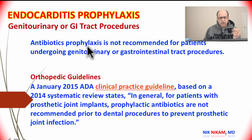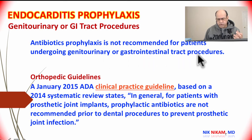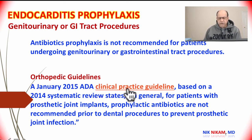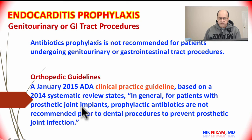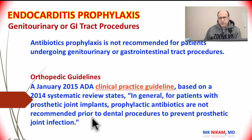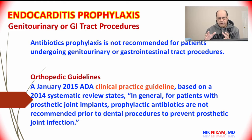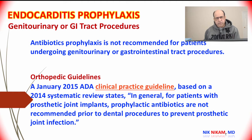Routine use of antibiotic prophylaxis is not recommended for patients undergoing genitourinary or gastrointestinal tract procedures. Regarding orthopedic guidelines: in January 2015, the ADA clinical practice guidelines stated that in general, for patients with prosthetic joint implants, prophylactic antibiotics are not recommended prior to dental procedures to prevent prosthetic joint infection. That is to say, people going for dental workup who have prosthetic joints do not routinely need antibiotic prophylaxis.